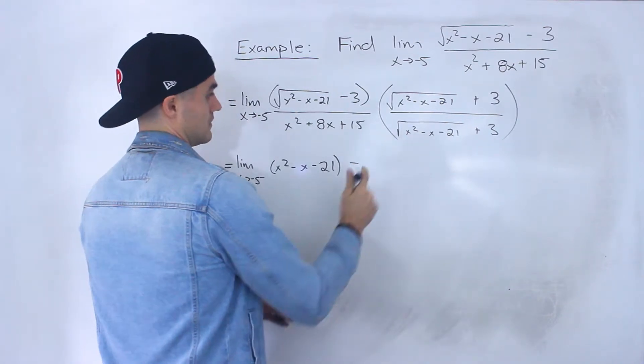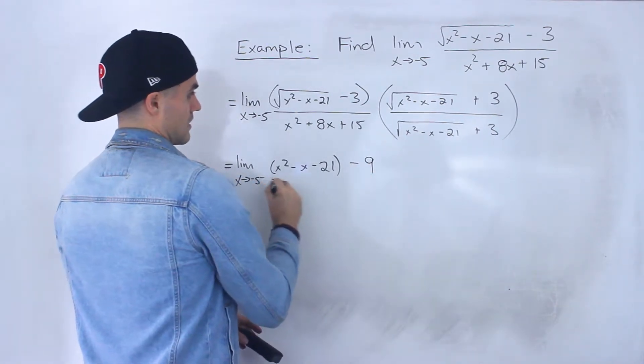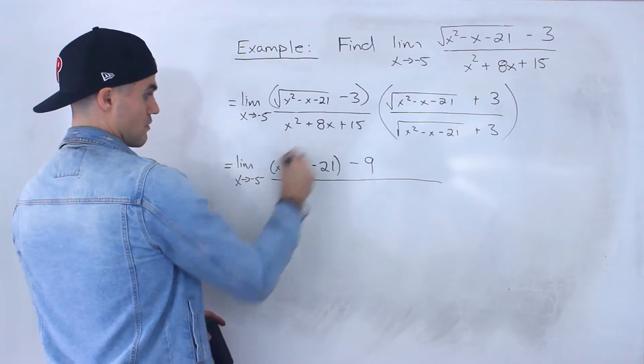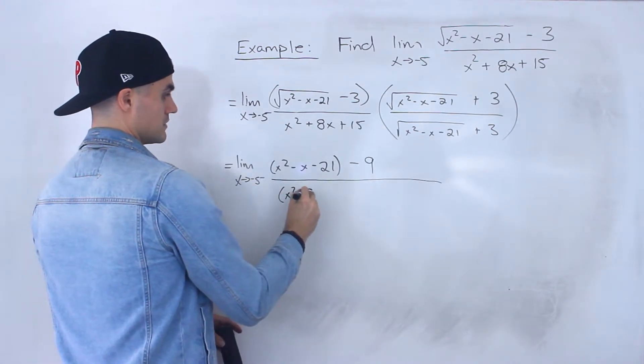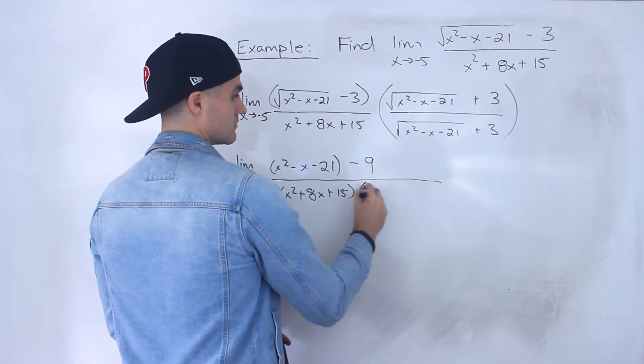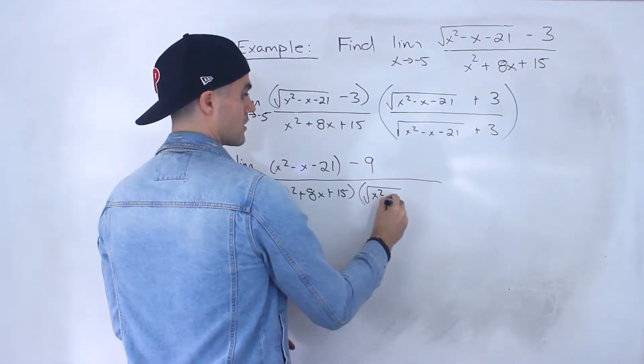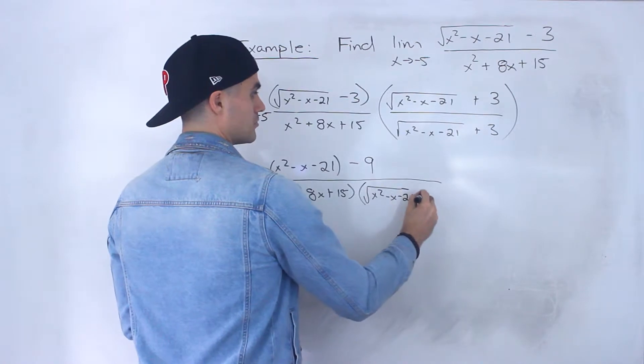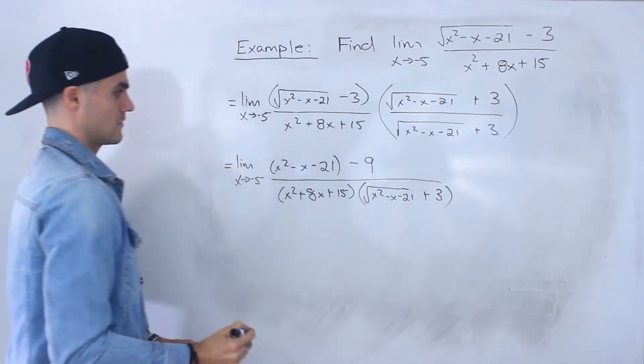All over this expression times this expression. We'll keep them separate, the square root of x squared minus x minus 21 plus 3 like that.